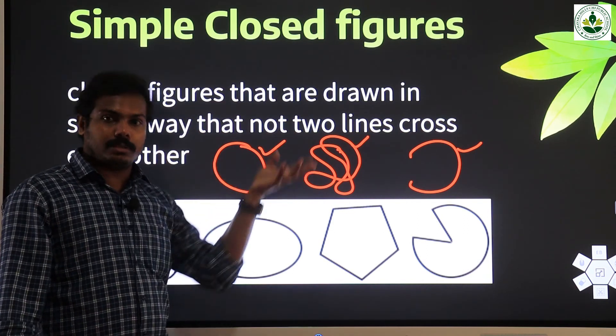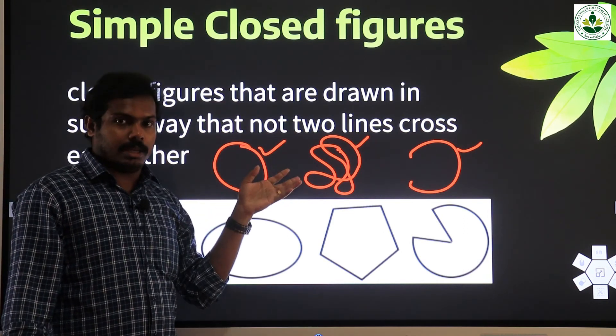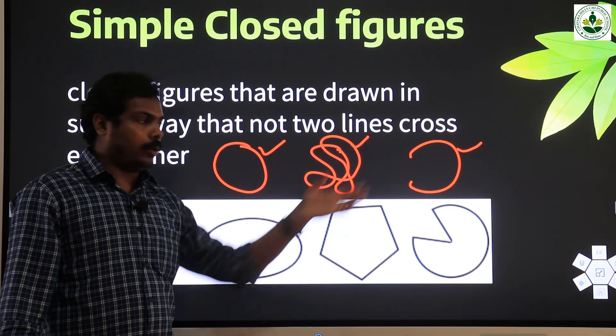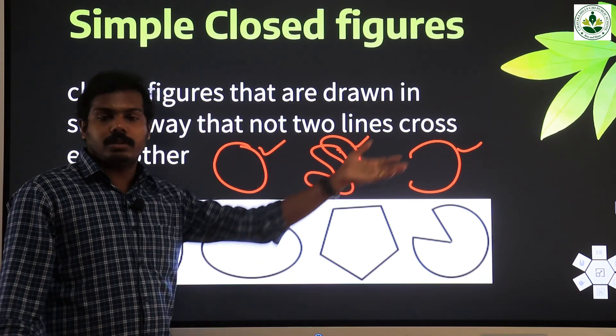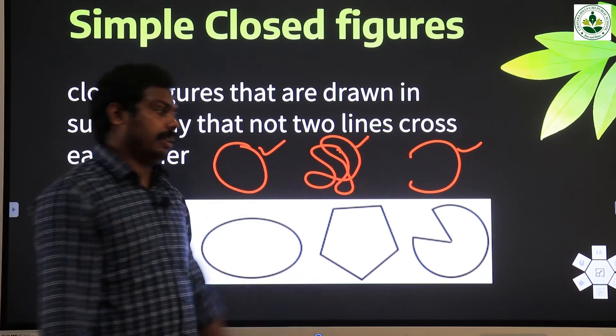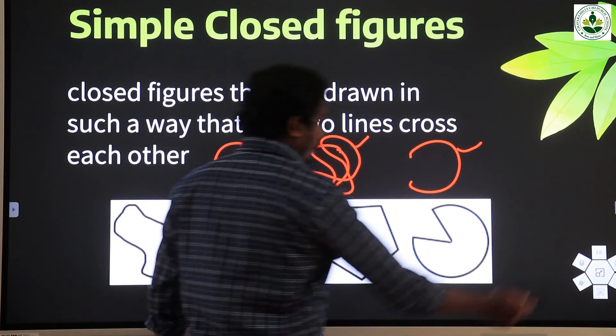Closed figure means the same starting point and ending point. Open figure means different starting point and ending point.